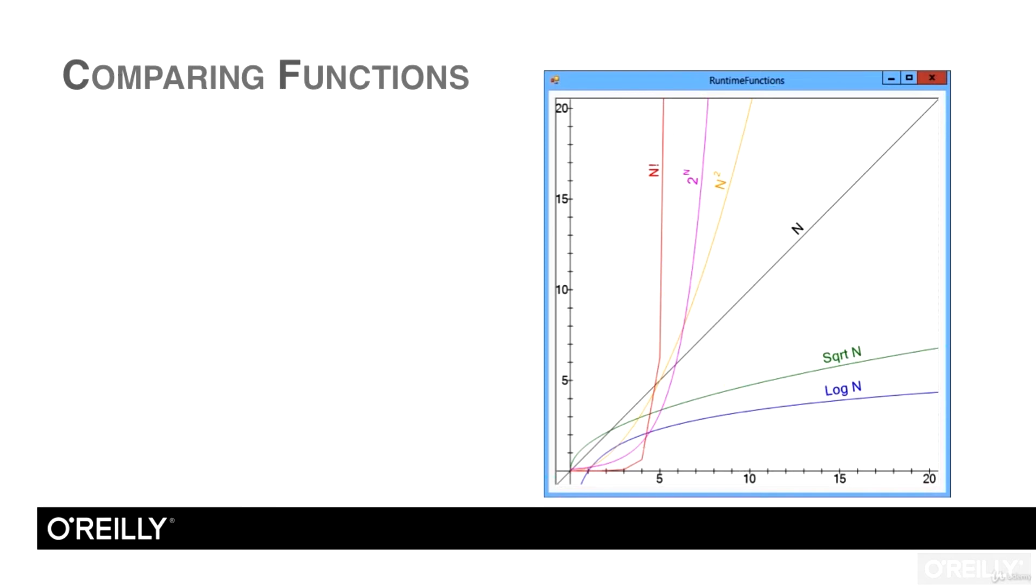Because this function grows so quickly, algorithms with order 2 to the n performance are only practical for relatively small values of n. Finally, the red curve represents the factorial function. This function blows the others away. If you look closely at the graph, you'll see that it's practically vertical when it leaves the visible area. Algorithms with this performance are only practical on a computer for very small values of n.